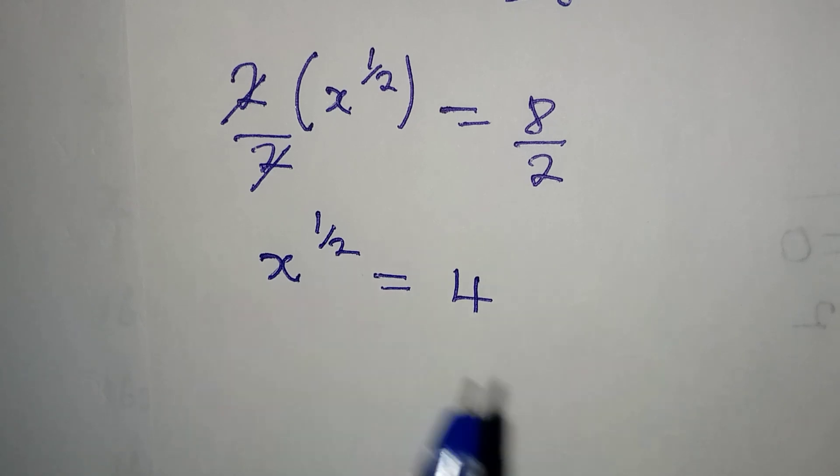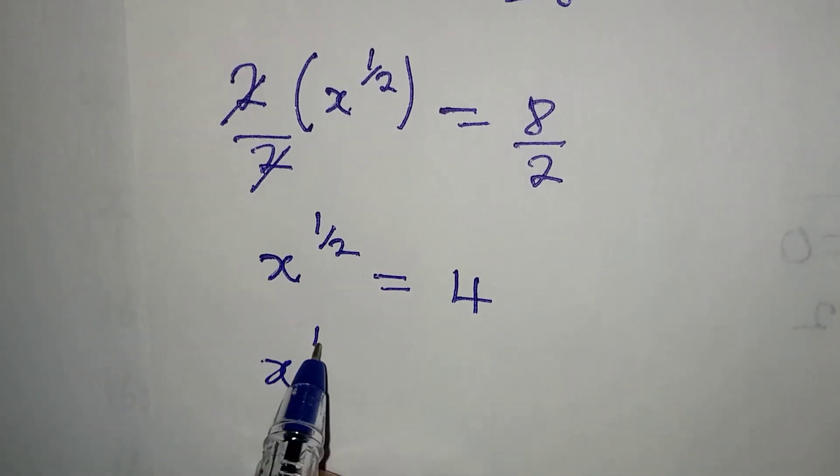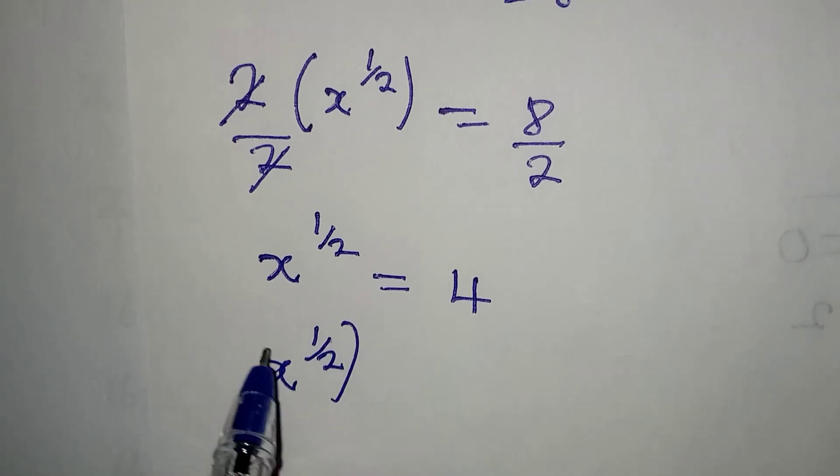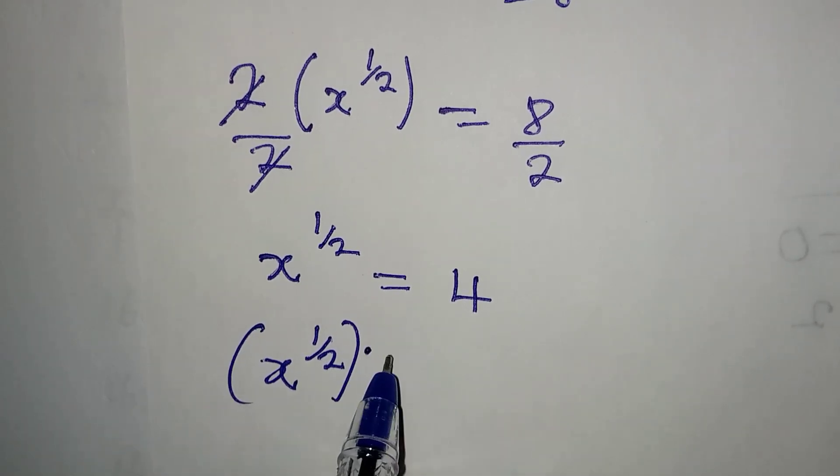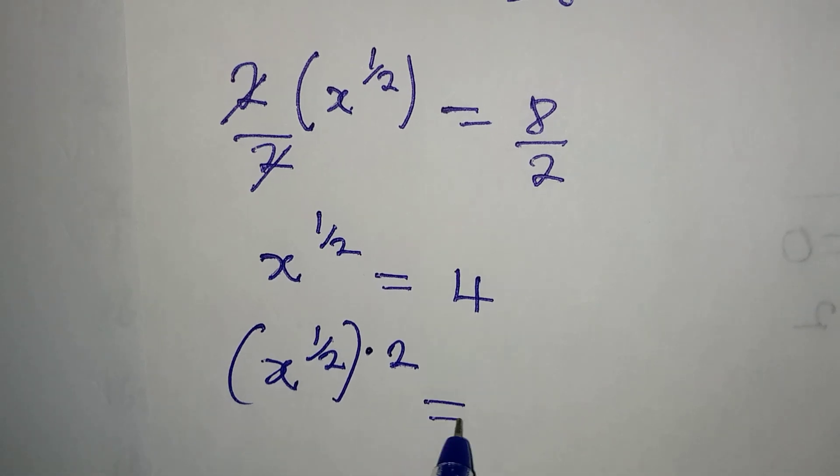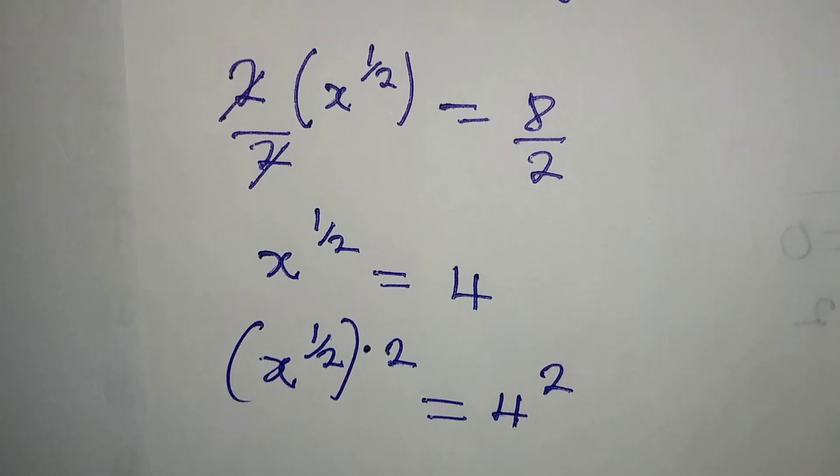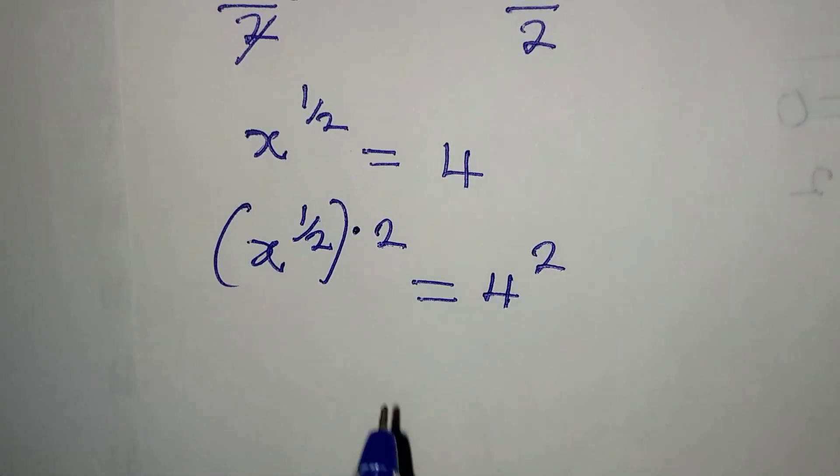So it will be x to the power of 1 over 2, multiply by 2, because that's the reciprocal of 1 over 2. Now this 2 we introduced will reflect on the right, so we must have 2 here as well. And then what do we do from here?